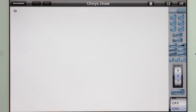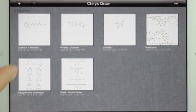To open an existing drawing in ChrysDraw, touch the Documents button at upper left. Then touch the drawing you want to view or edit.